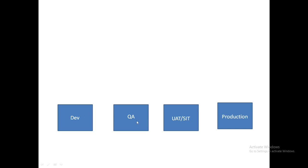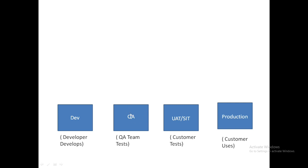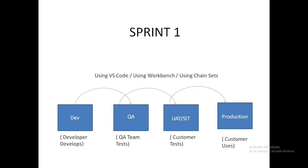Let's say there is a Dev org, a QA org, a UAT/SIT org, and a Production org. The Dev org is used by developers to develop everything they want, and then they deploy to the QA org where the QA team tests the basic functionality by running scripts. Once QA is done, it is deployed to UAT/SIT where the customer runs test cases. If it passes, it moves to Production where the customer actually uses the system.